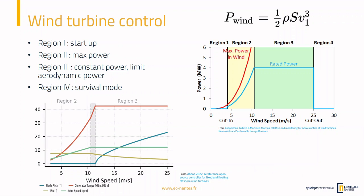To illustrate how control works, here is a plot describing the control parameters for a 5 MW wind turbine. In blue is the blade pitching angle, and in red is the generator torque. In the low-speed region 2, we are not pitching the blade — blades are designed for maximum lift at zero pitch angle. Instead, we increase generator torque, because in this region, to extract maximum power from the wind, the generator torque must increase with the square of the rotor speed.